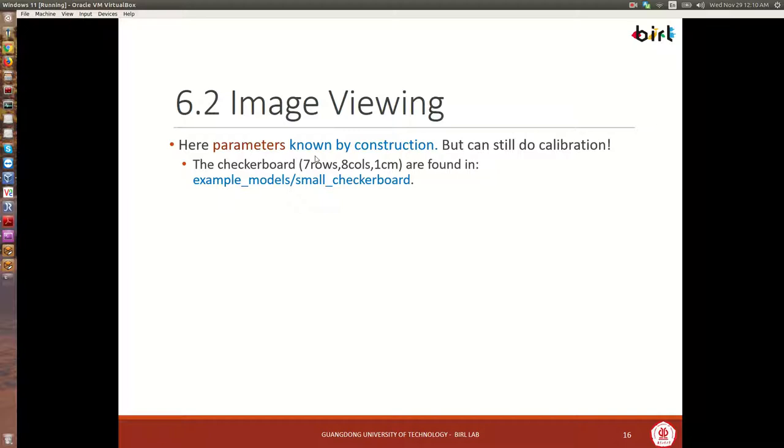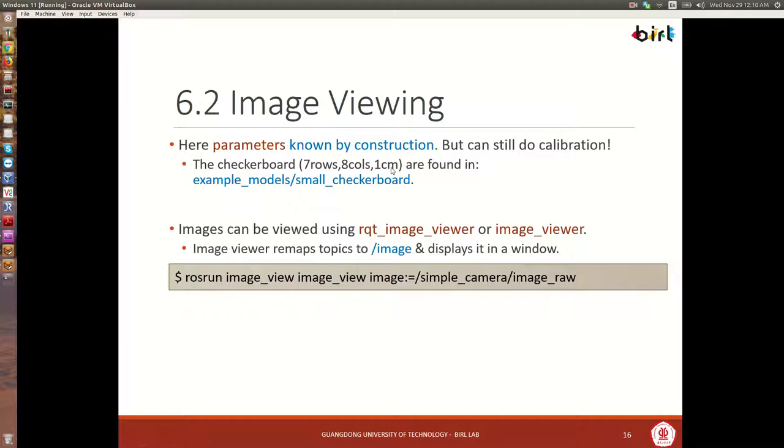If we want to look at an image, we're going to be looking at a checkerboard. Because we created the model of the checkerboard in simulation, we know the parameters by construction. But that doesn't mean we can't run the calibration algorithm and see if we're going to get the same results that we had from our model. In our model, which you can find right here, example model, small checkerboard, we're going to create a checkerboard that has seven rows and eight columns. And each square is going to be one centimeter in width and height.